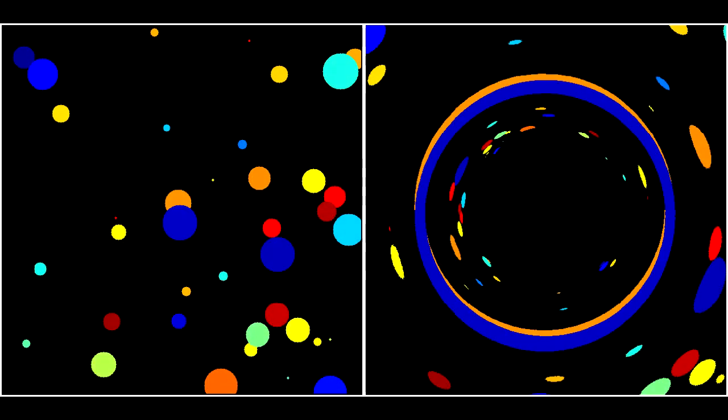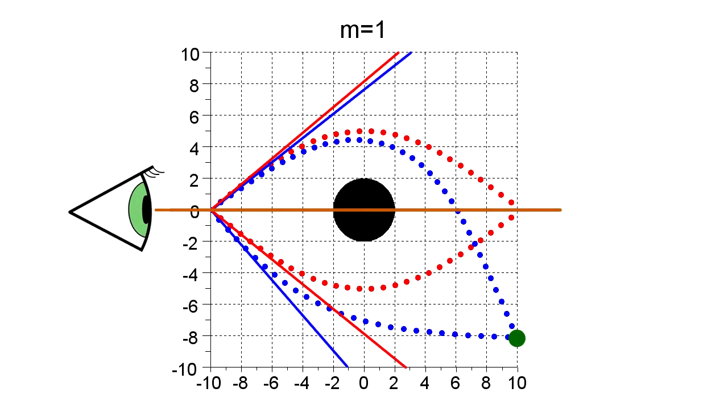If the rings come from objects directly behind the mass, where do the little images inside the rings come from? Back on our illustration, imagine an object off the brown line.